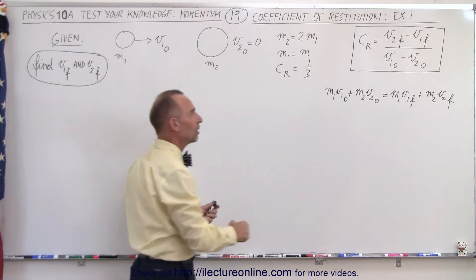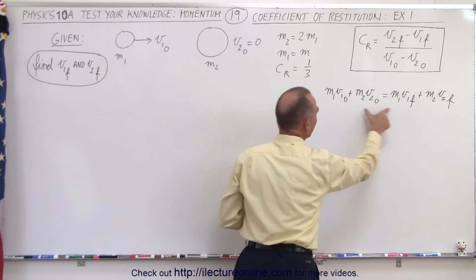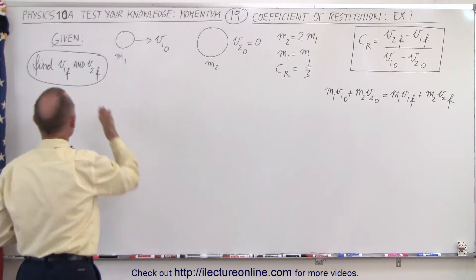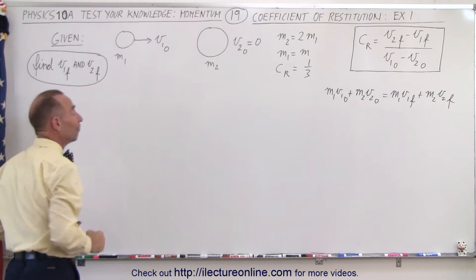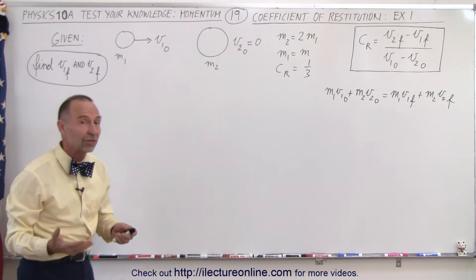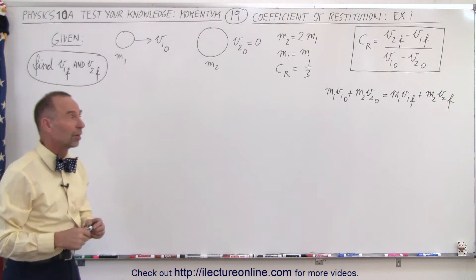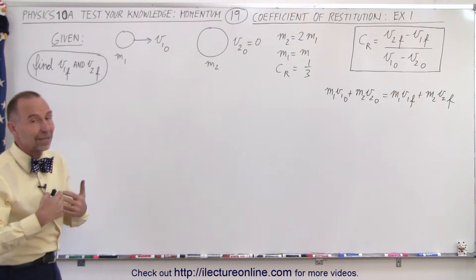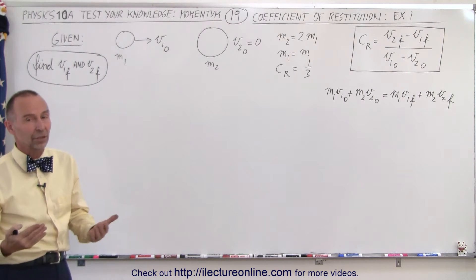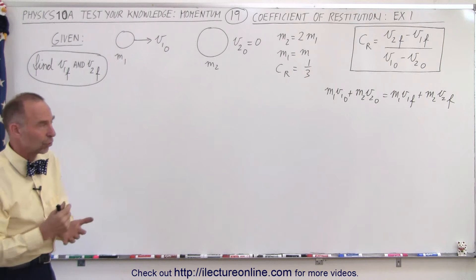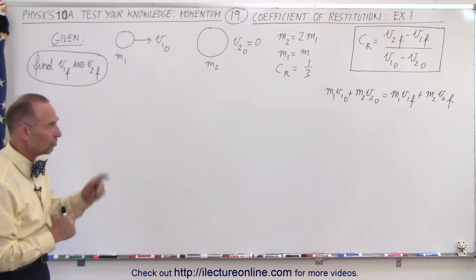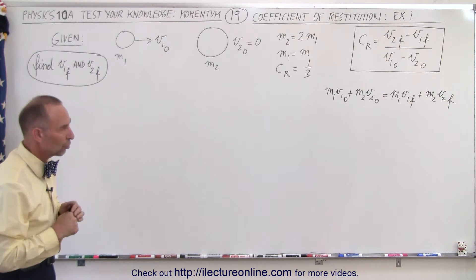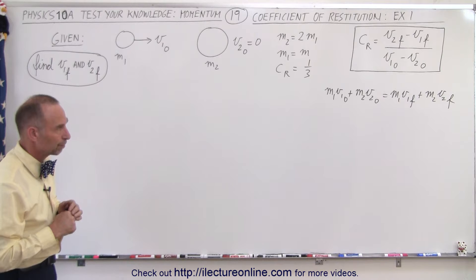There we have the definition of the coefficient of restitution, and this is of course the conservation of momentum equation. Based upon all that, can we find the final velocities of the two objects? Notice there are two unknowns. It is not an elastic collision, so we can't use conservation of energy, but we can use the coefficient of restitution equation.